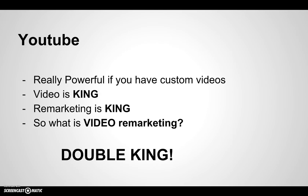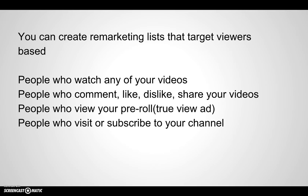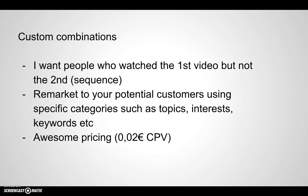Let's go really quick to YouTube. It's really powerful if you have custom, nice videos. Video is king, remarketing is king — so what does that make video remarketing? A double king, lab rats. That works like a charm. You can create a remarketing list that targets viewers based on people who watch any of your videos, people who comment, like, dislike, or share your videos, who view your pre-roll ads, or who visit or subscribe to your channel. You may also use custom combinations — for example, people who watched the first video but not the second, when you have a sequence. Remarketing to your potential customers using specific categories such as topics, interests, and keywords.